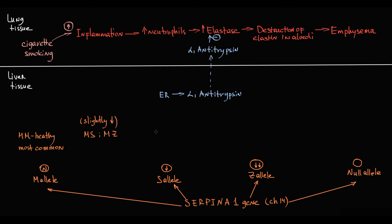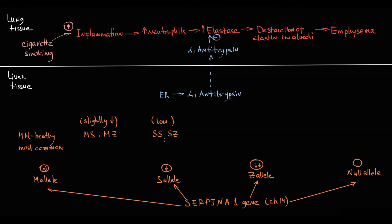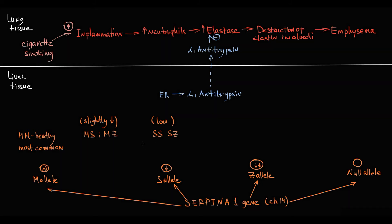SS and SZ combinations result in low antitrypsin production. Importantly, there is still enough antitrypsin to protect lung tissue, but this category of patients is at high risk of lung injury, especially with smoking.